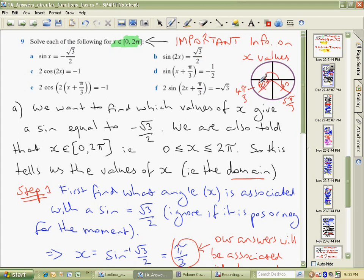Here we can see, or 60 or π on 3, so here we can see that occurs here in the third and fourth quadrants, which is actually 4π on 3 and 5π on 3.